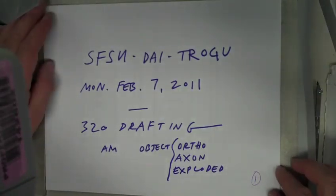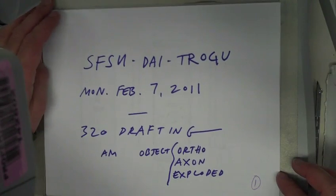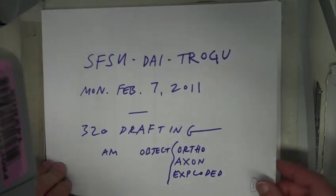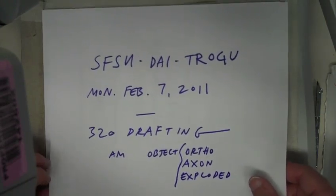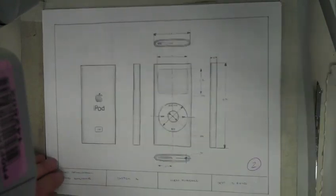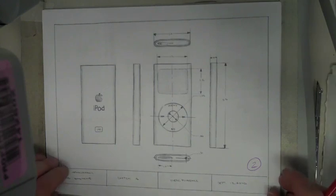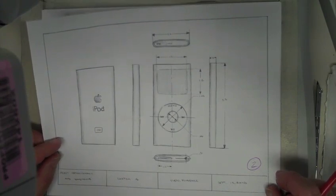This assignment is about the orthographic of your object, and also the axonometric and the exploded view. It's February 7th, Monday. This is the example that's in iLearn — pretty straightforward. These drawings are all going to be freehand.